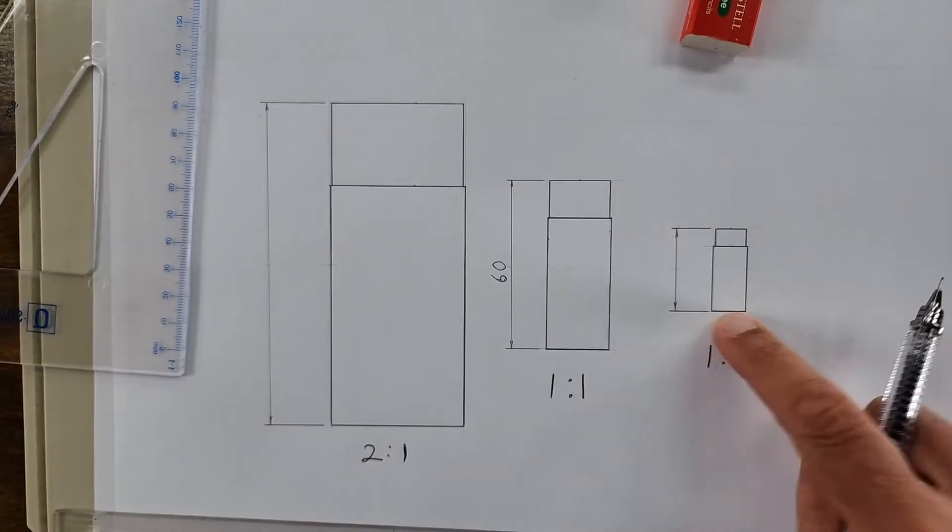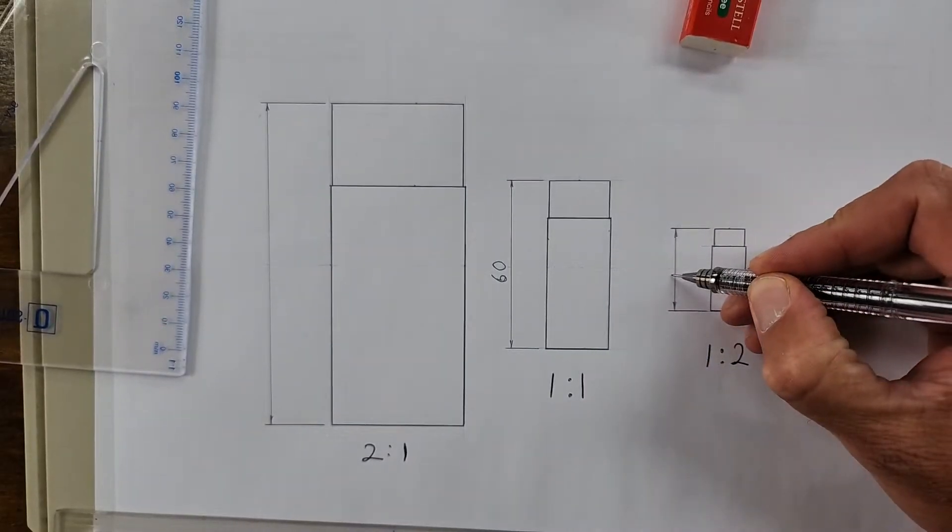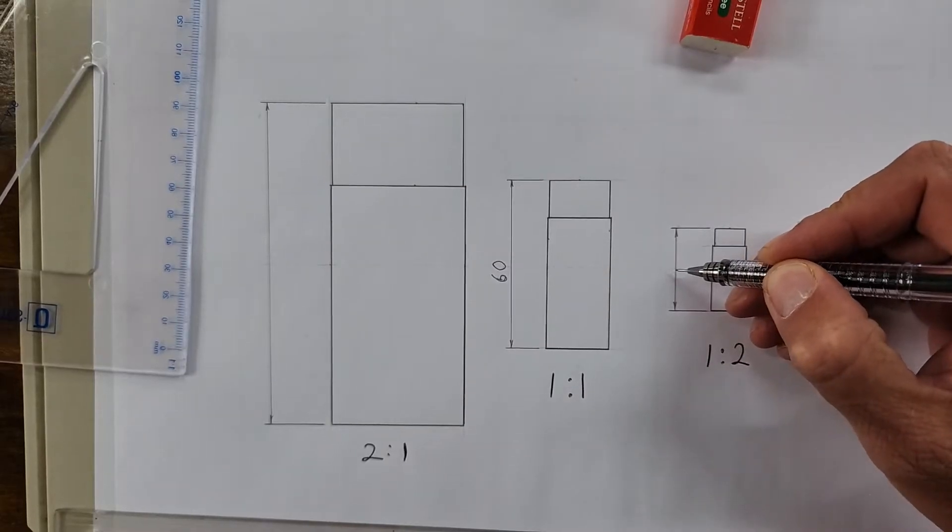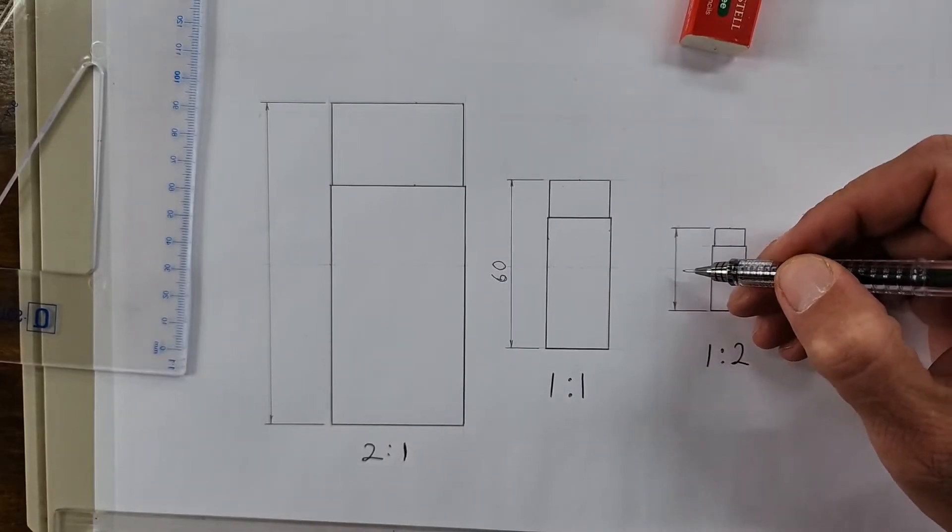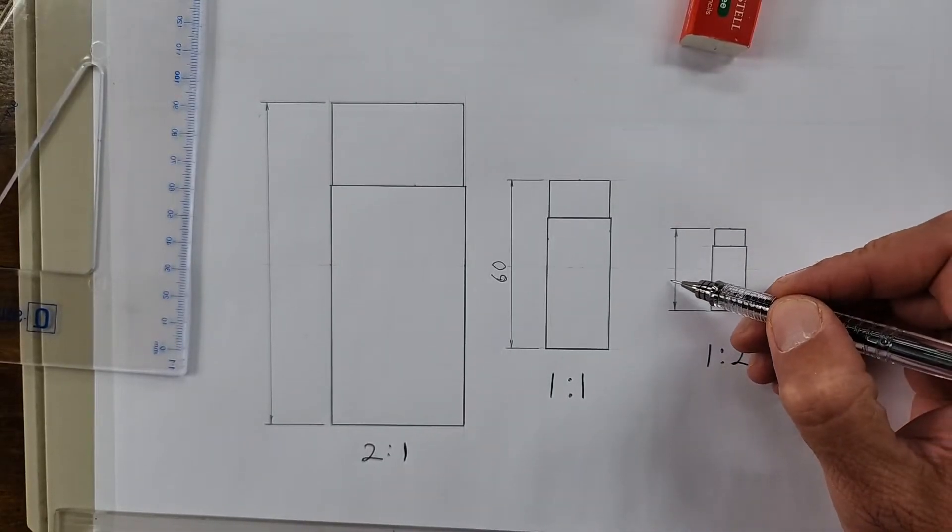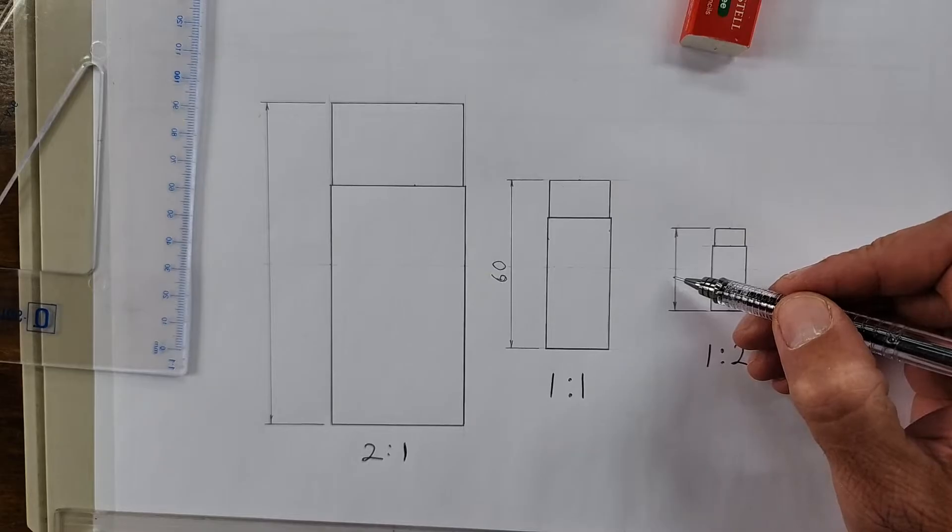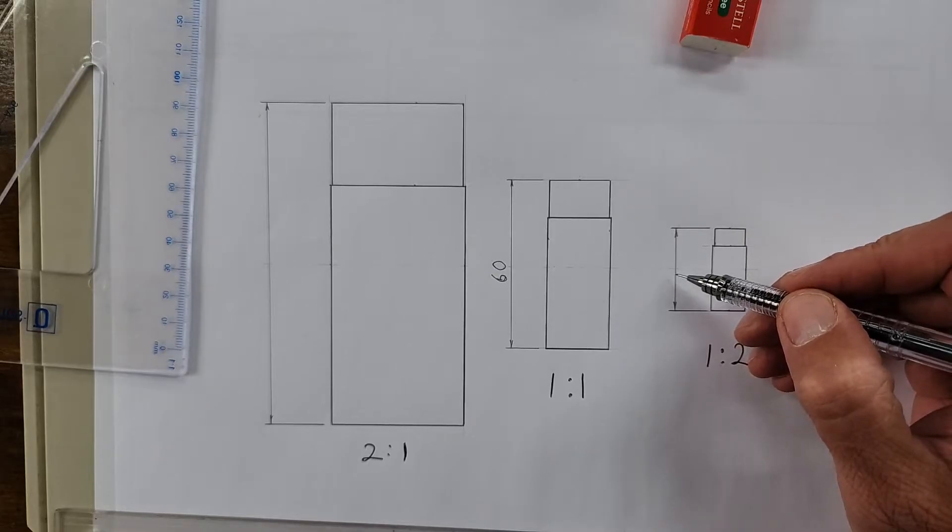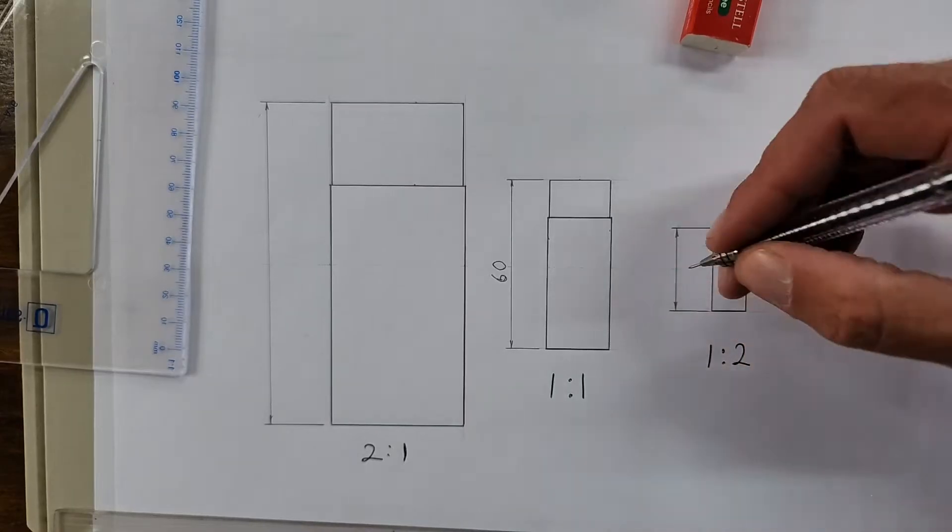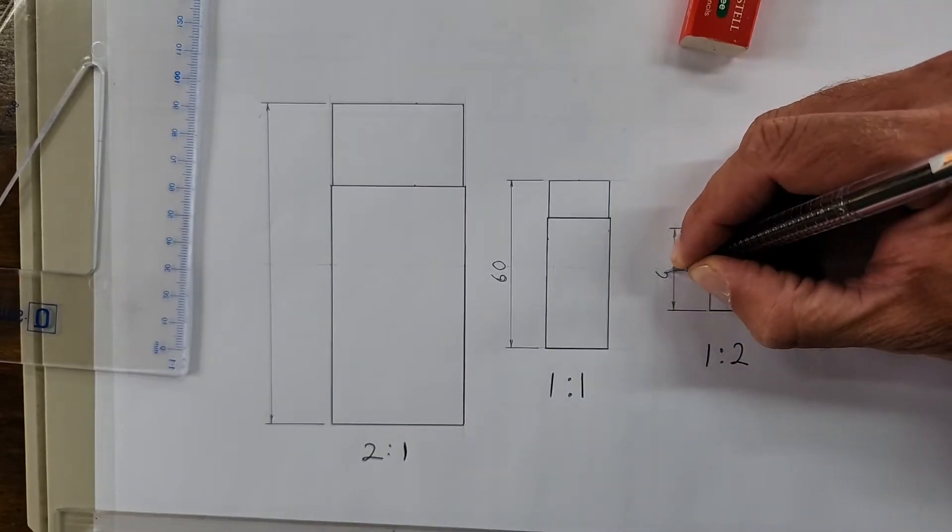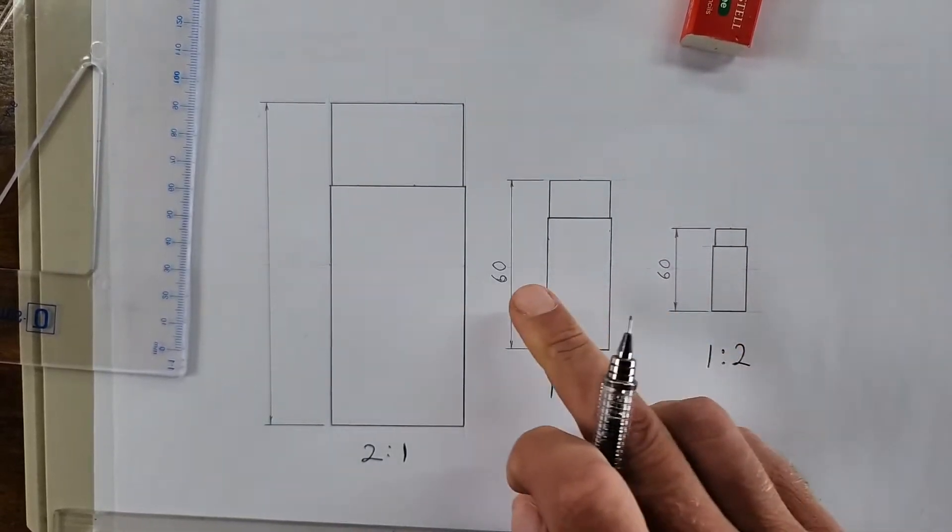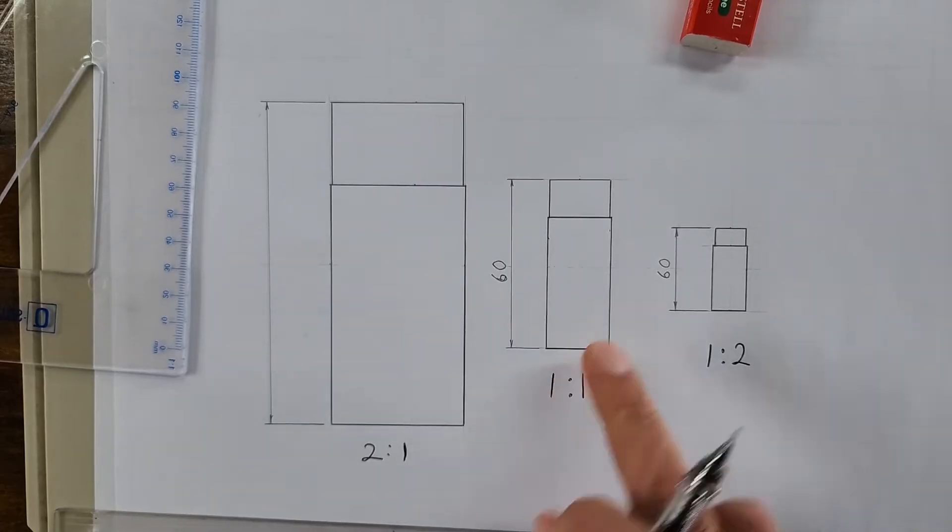Scale 1 to 2, what will the dimension now read that I write in here? 30? The answer is 60, people. The dimension that you write in here does not change. It's only the drawing that changes.